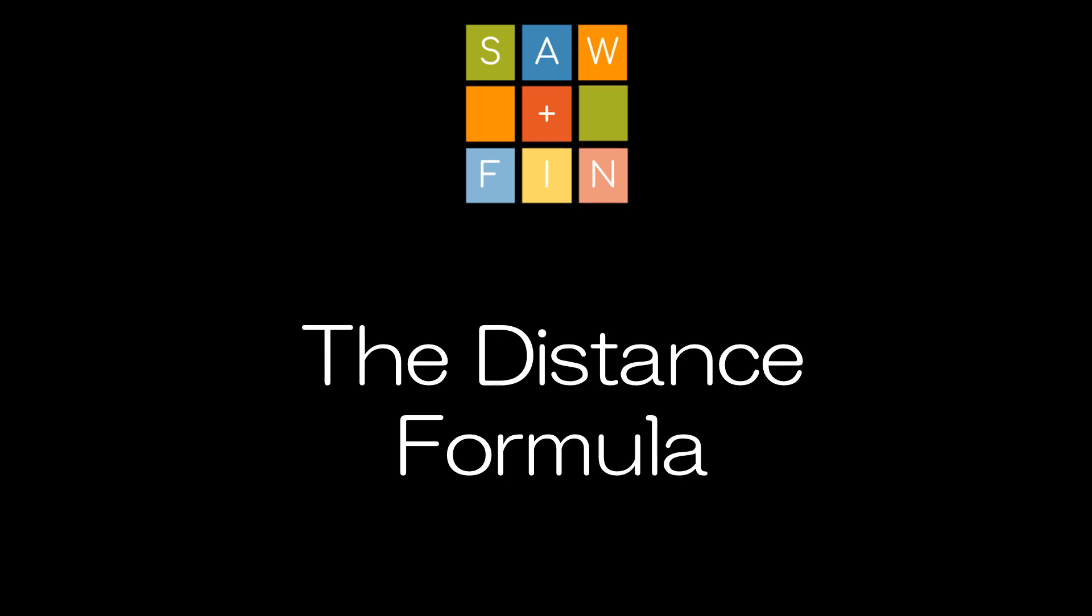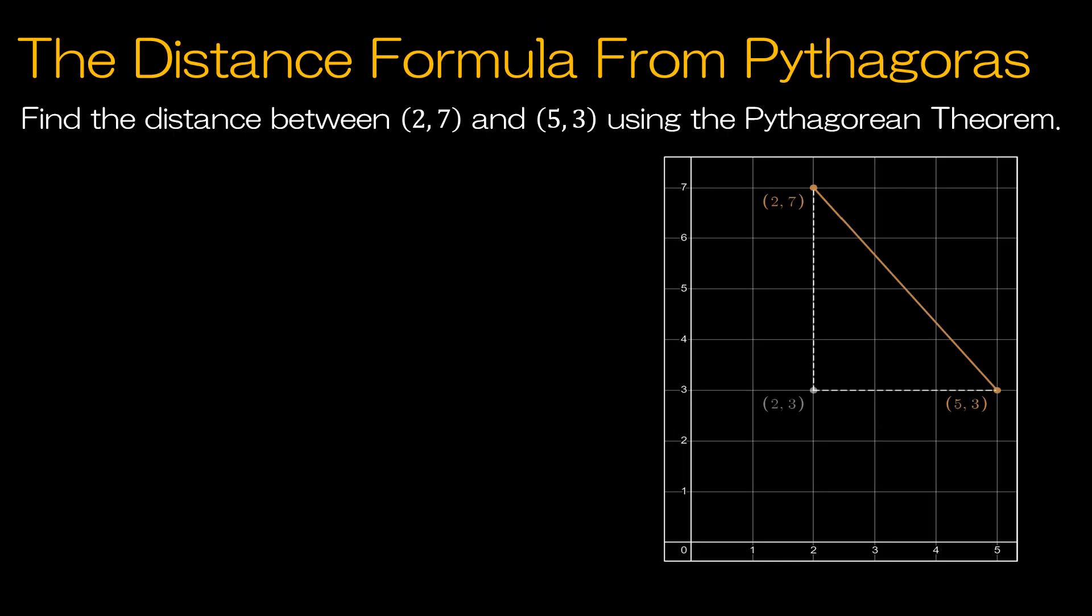In this video, we're going to review the distance formula. Let's take a look now at the distance formula, starting with Pythagoras, which is of course the Pythagorean theorem. So just to recall, hopefully we all know the Pythagorean theorem says in a right triangle, then we can take the leg squared plus the leg squared, and the sum of those should equal the hypotenuse squared. So when I'm talking about legs, I'm talking about the two that make up the right angle. So on our figure, we could say this is A, this is B, this is C.